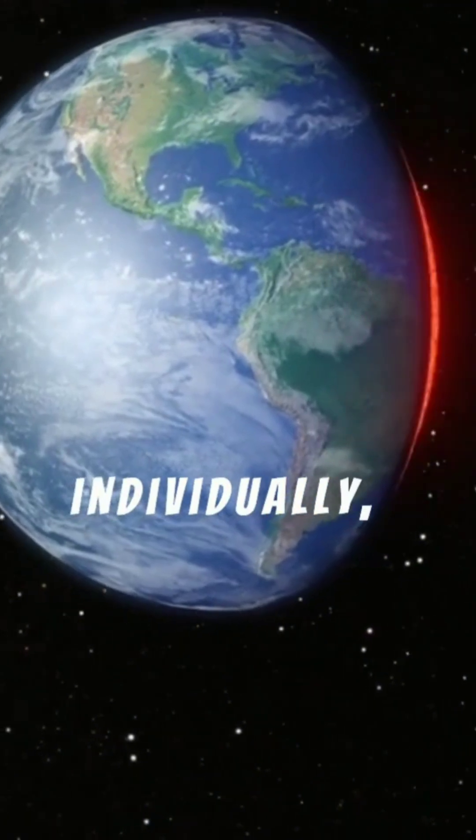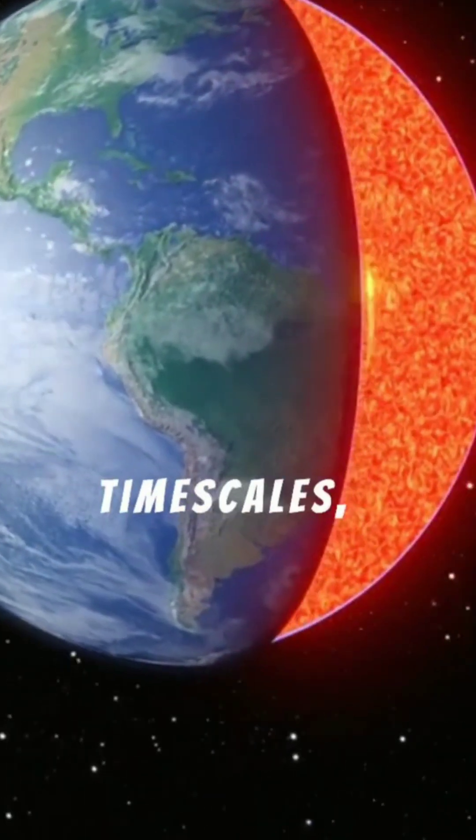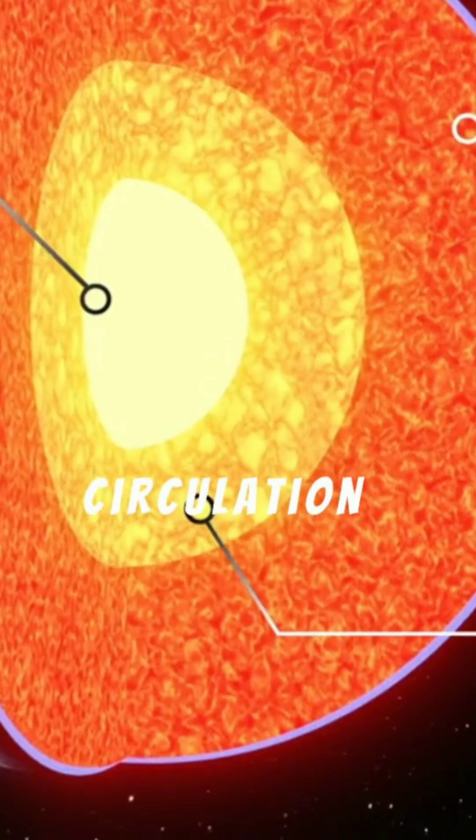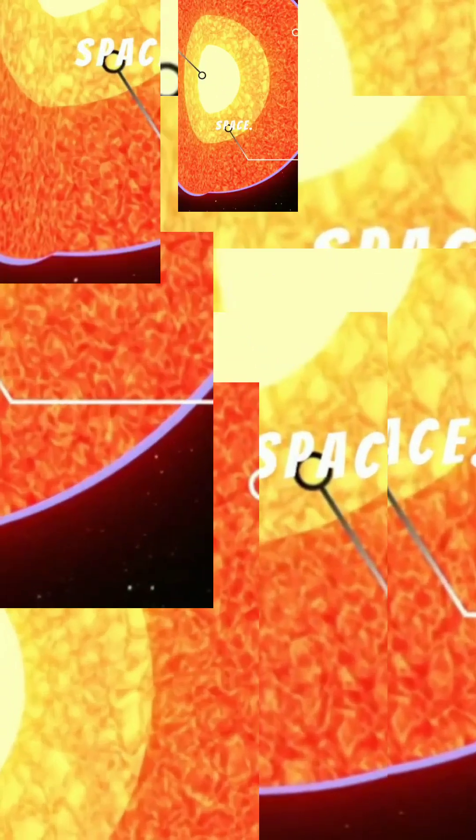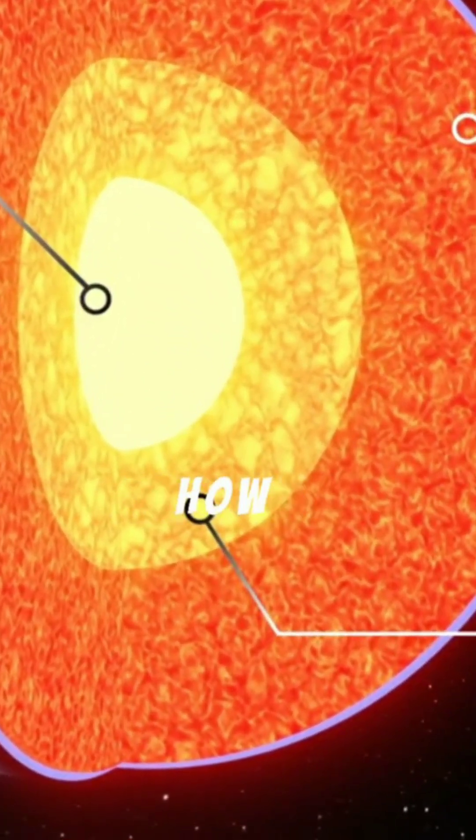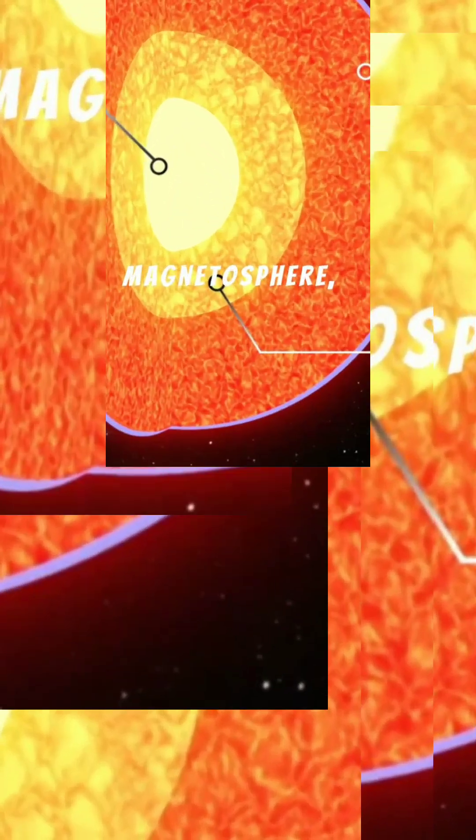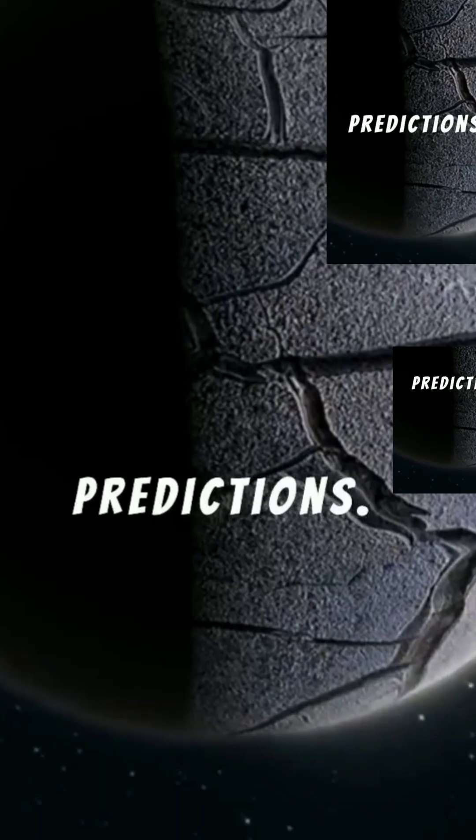The effects are small individually, yet cumulative over long timescales, influencing energy balance and atmospheric circulation near the edge of space. This improves models of how Earth's atmosphere couples to the sun and magnetosphere, especially for climate and satellite drag predictions.